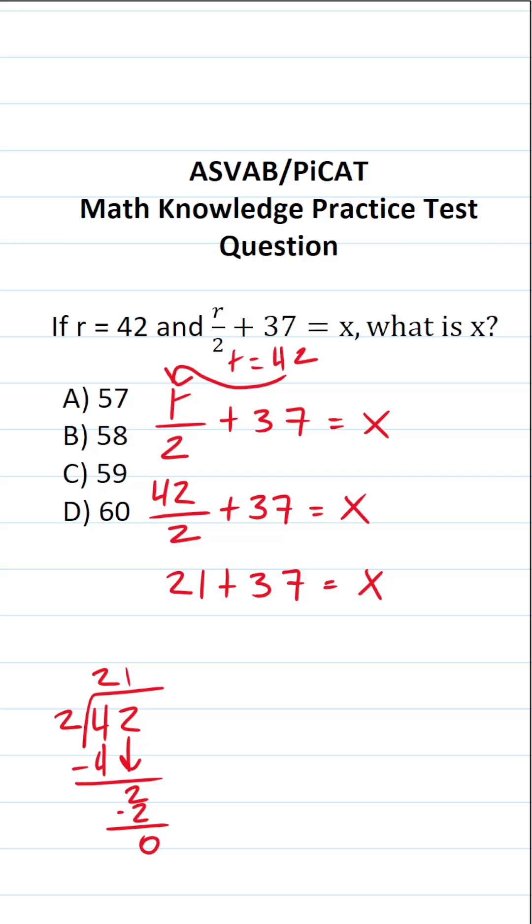The next thing we have to do is 21 plus 37. You should be able to do that part mentally, but if you can't, you will have scratch paper on test day. Let's work this out. 1 plus 7 is 8. 2 plus 3 is 5. So this is 58 equals x.